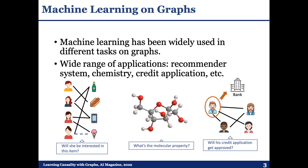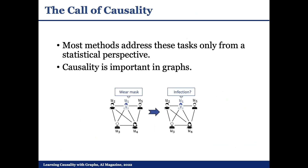But beyond the statistical level, we may also want to understand causality, which is often considered as a significant component of human-level intelligence. For example, in a contact network where each node is an individual and each edge represents physical contact, we are more interested in the causal effect of wearing face masks on reducing COVID-19 infection rather than the simple correlation between them.